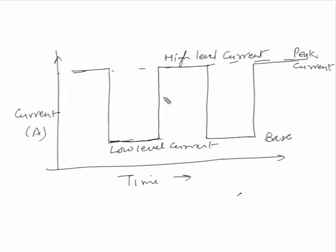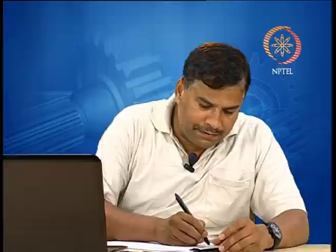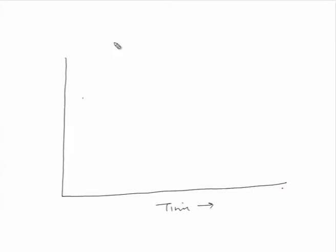The peak current is designated as IP and the base current is designated as IB. The y-axis shows variation in current and the x-axis shows time. During welding, as time changes there is variation in current. There can be various waveforms in which current can vary between the low level and a high level.